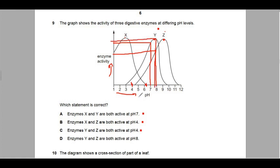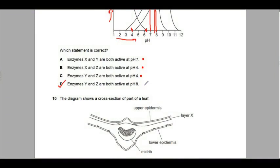So should be left with D: enzyme Y and Z are both active at pH 8. pH 8, you've got activity there for Z, correct. Again if we go from pH 8 we've got an activity there for Y, correct. So our answer is D.